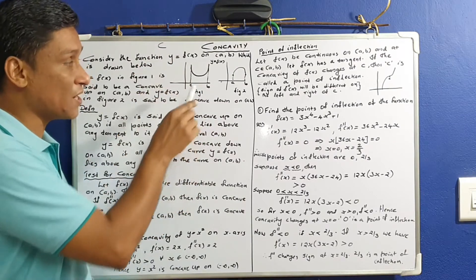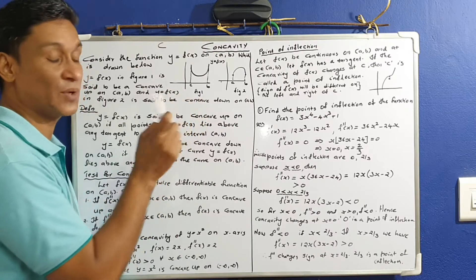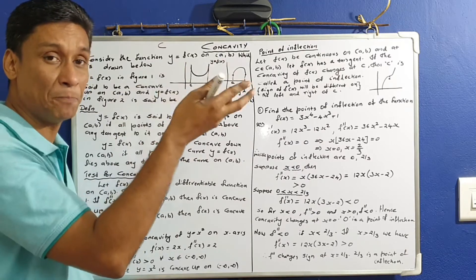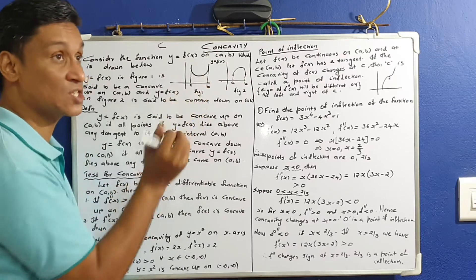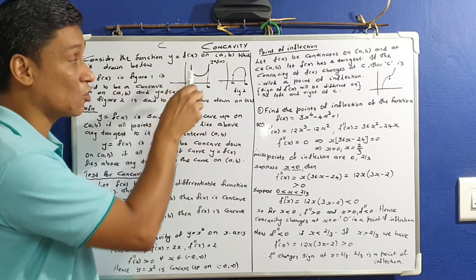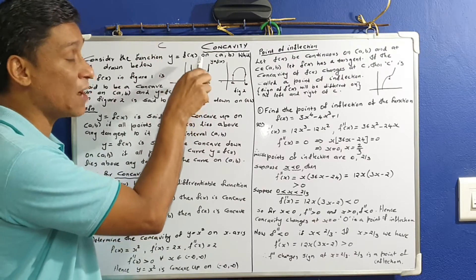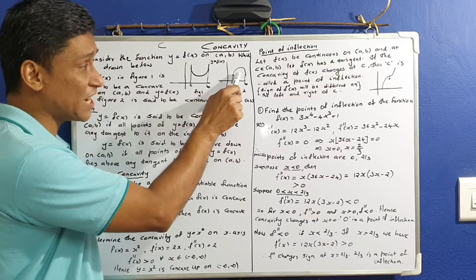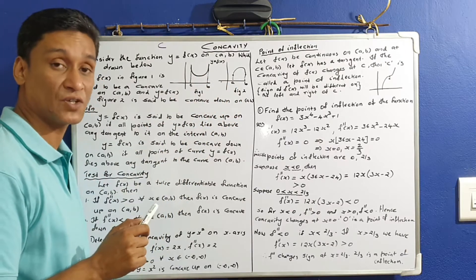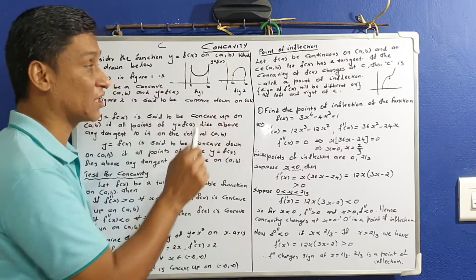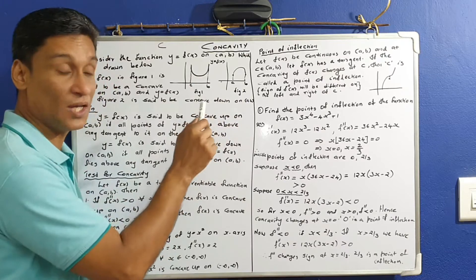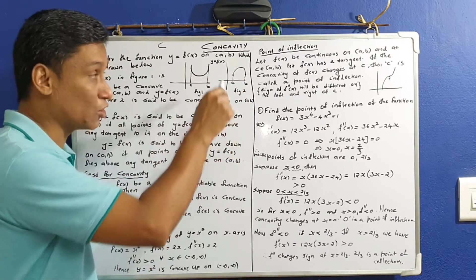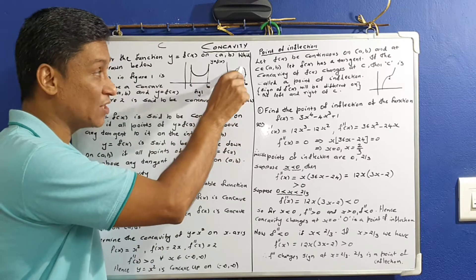The curve is called a, b as the interval — Concave Up. Concave is called Upward.